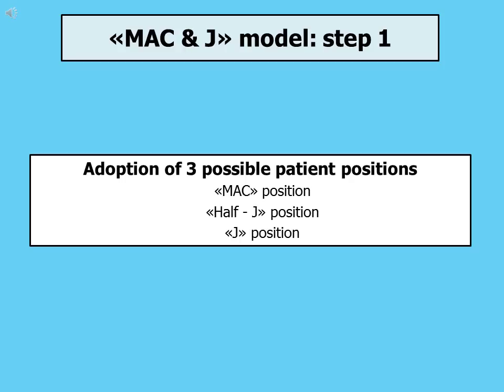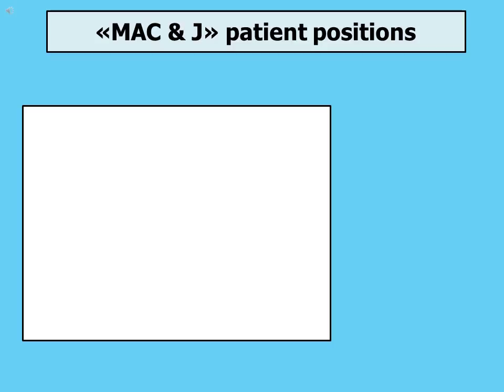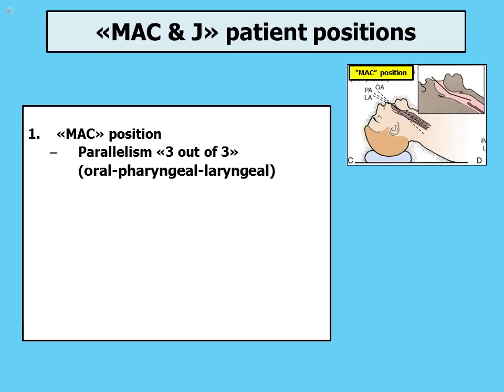Many of us, when managing airways, think only of direct laryngoscopy, using the same pillow to obtain what they think is a proper flexion of the neck and extension of the head. The model instead suggests observing the shape of the patient's body to obtain three possible positions, using pillows with different thickness or no pillow. For each of the three possible positions, it will result in the possibility to choose different airway management devices.